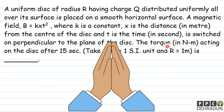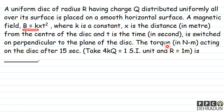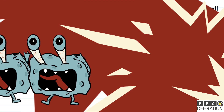Welcome students, let's look at this problem. A uniform disc of radius R having charge Q distributed uniformly all over its surface is placed on a smooth horizontal surface. A magnetic field B = KXT², where K is a constant, X is the distance in meters from the center of the disc, and T is the time in seconds, is switched on perpendicular to the plane of the disc. Find the torque in Newton meters acting on the disc after 15 seconds.